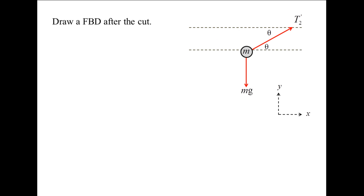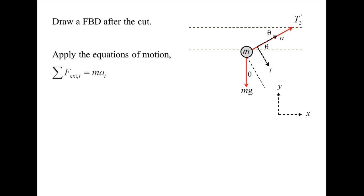After wire 1 is cut, the tension in wire 2 is T2 prime. Since the sphere will start to move in a circular path, normal and tangential coordinates will be more convenient. The t-coordinate points in the direction tangent to the sphere's circular path, and the n-coordinate points toward the center of curvature. The weight still points downward with a magnitude mg and is oriented at angle theta from the t-direction. Applying the equations of motion, the sum of the external forces in the t-direction equals the sphere's mass times the acceleration in the t-direction, and similarly for the n-direction.